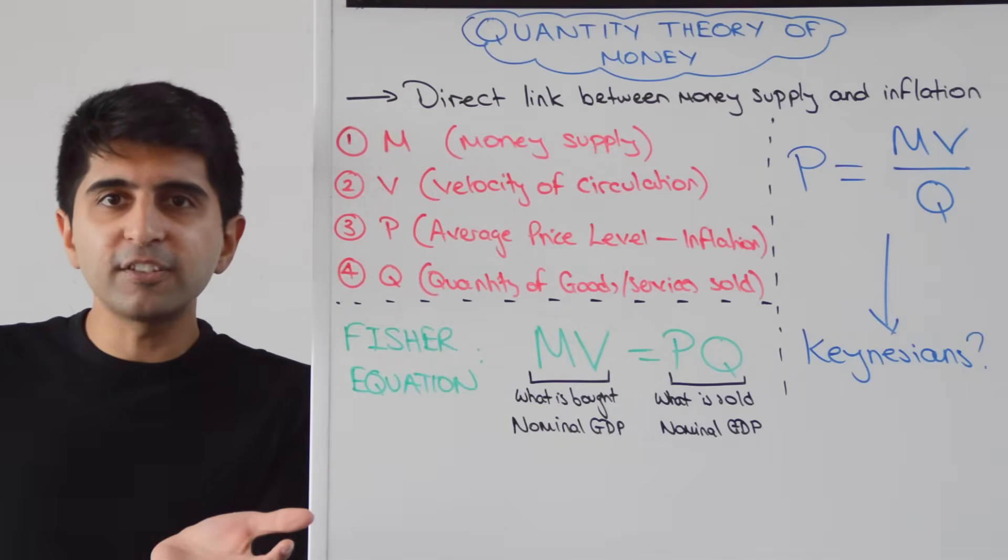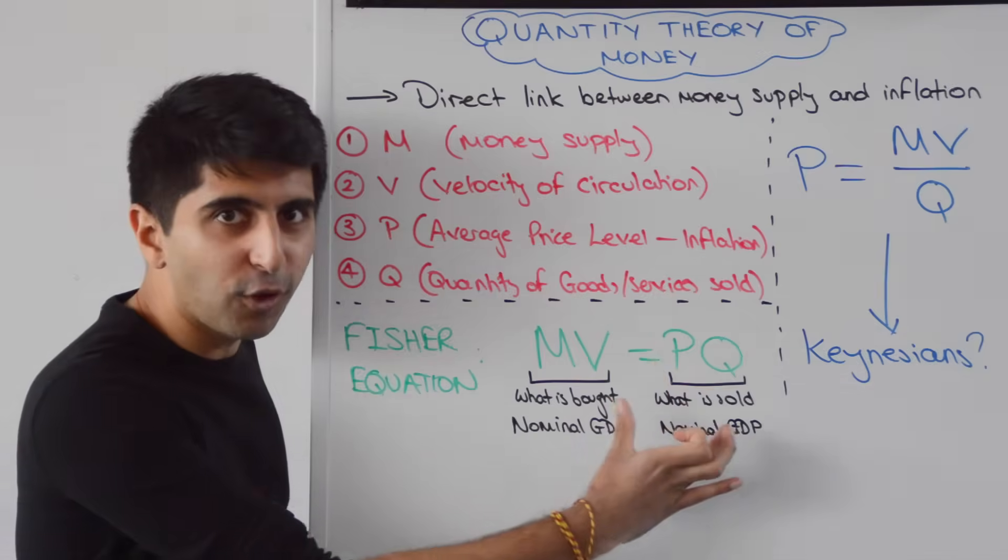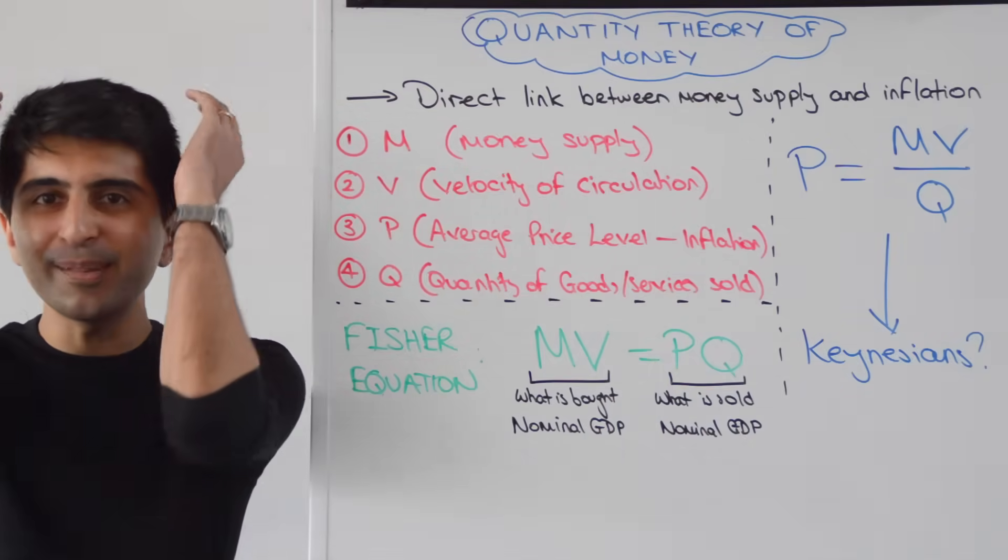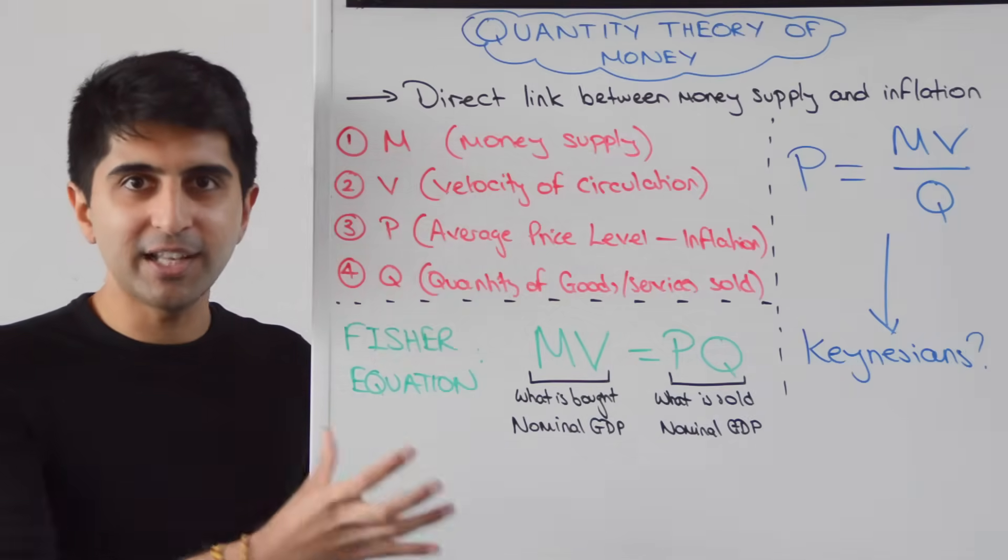By definition, clearly, what is sold must have been bought by somebody. What is bought by people must have been sold by producers. The two clearly have to be equal to each other, and that's the point. It's an identity. It's an identity. No one is questioning that identity.